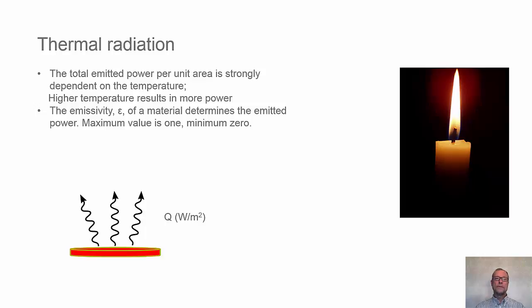All bodies with those temperatures emit radiation. Here to the right we see candlelight, which is one example which emits both visible light and non-visible light. The emitted power that comes from a body is dependent on the area of the body and the temperature, and with higher temperature emits much more power.